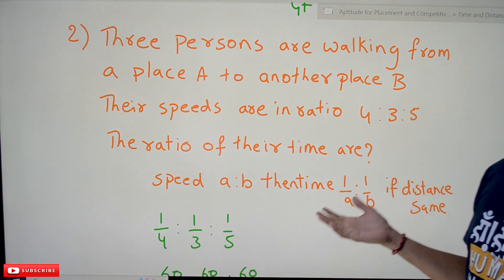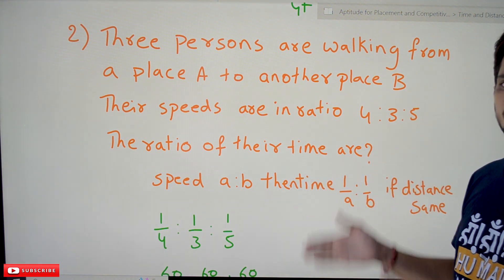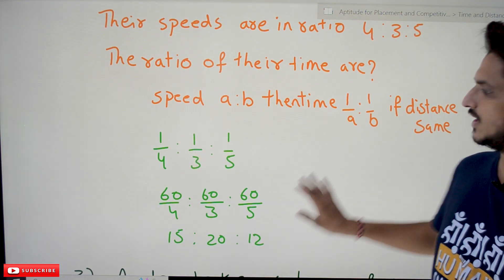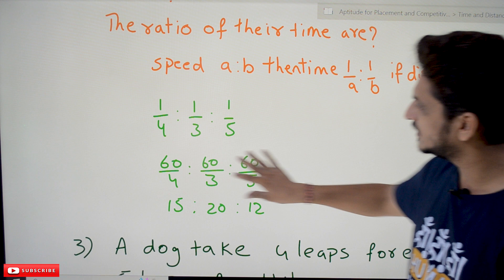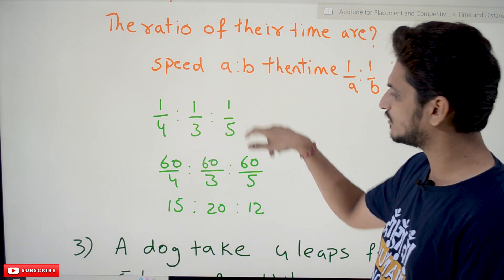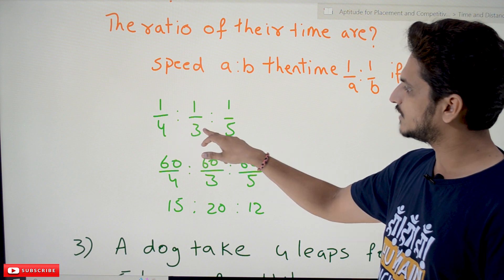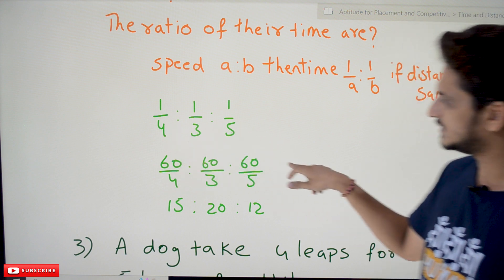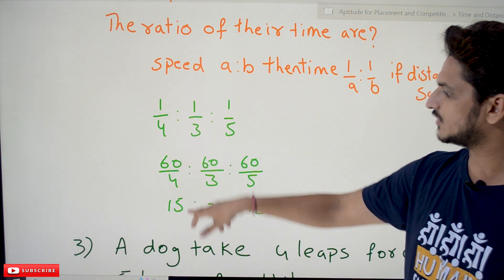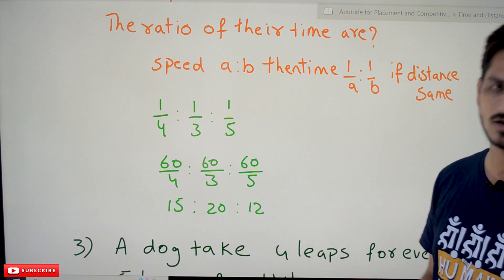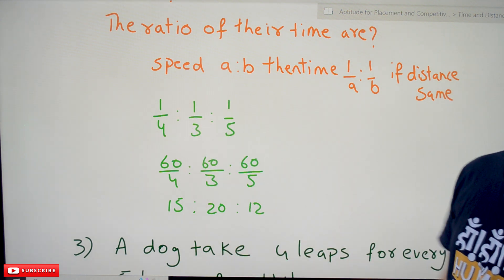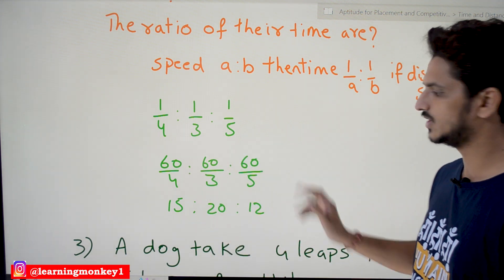The ratio of times is inversely proportional to speeds: 1/4 : 1/3 : 1/5. To convert these fractions to whole numbers, multiply through by the LCM of 4, 3, and 5 which is 60. So: 60/4 : 60/3 : 60/5 = 15 : 20 : 12. This is how we convert ratios of fractions into whole number ratios.